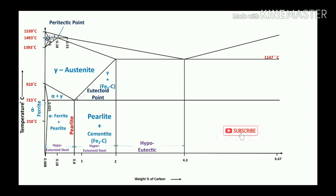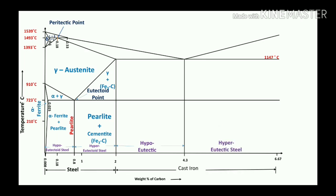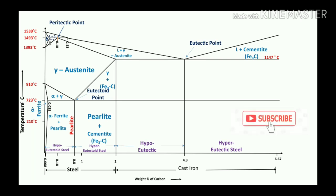In the case of eutectic reactions: hypo-eutectic and hyper-eutectic. Up to 2% is steel; from 2% to 6.67% is cast iron. For the cast iron category, the eutectic point is at 4.3% carbon and 1147°C. Eutectic means the liquid phase converts into two solids. Before 4.3% is hypo-eutectic and after 4.3% is hyper-eutectic.